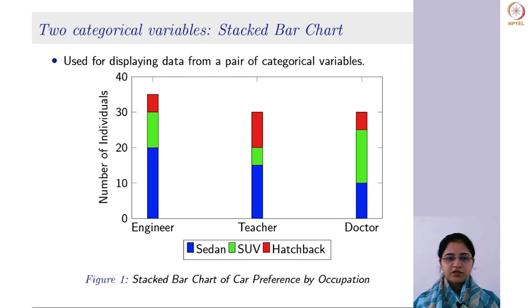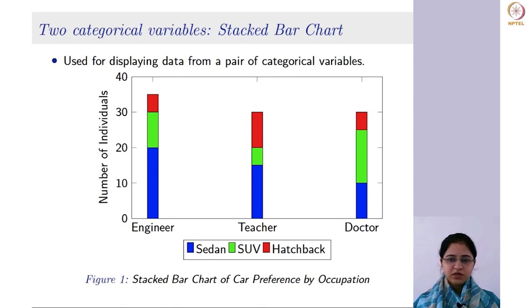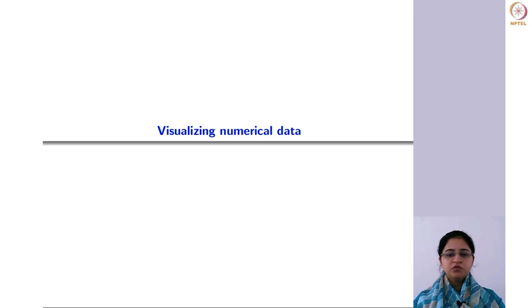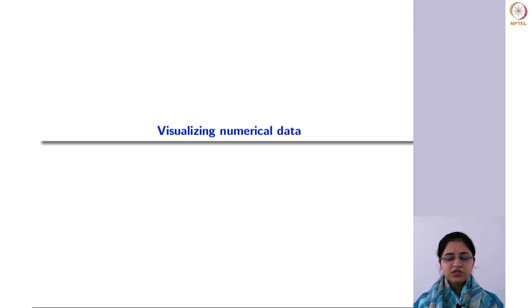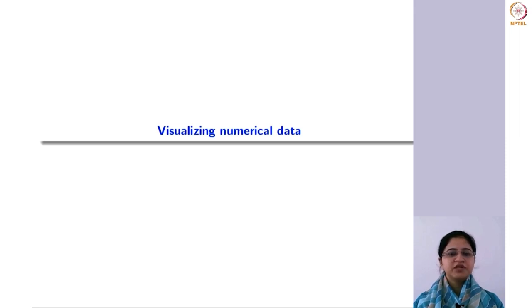The stacked bar chart basically gives you an easy interpretation when you have two categorical variables and you want to investigate the relationship between them. To summarize: for one categorical variable we can use bar chart and pie chart, and for two categorical variables we can use the stacked bar chart, for which we may need a contingency table. This was all about categorical variables. Next we move on to numerical data sets — we can use three charts: dot plot, histogram, and box plot. We will first see these three for a single numerical variable, then move on to scatter plot for two numerical variables.